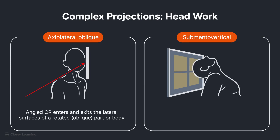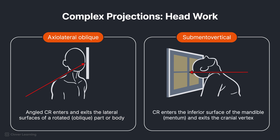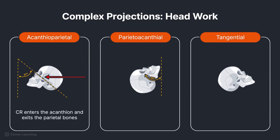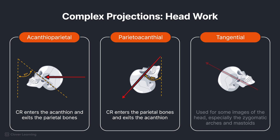Complex projections used commonly in headwork include: Axiolateral oblique — angled CR enters and exits the lateral surfaces of a rotated or oblique part or body. Submentovertical — CR enters the inferior surface of the mandible or mentum and exits the cranial vertex. Acanthioparietal — CR enters the acanthion and exits the parietal bones. Parietoacanthial — CR enters the parietal bones and exits the acanthion. Tangential is also used for some images of the head, especially the zygomatic arches and mastoids.